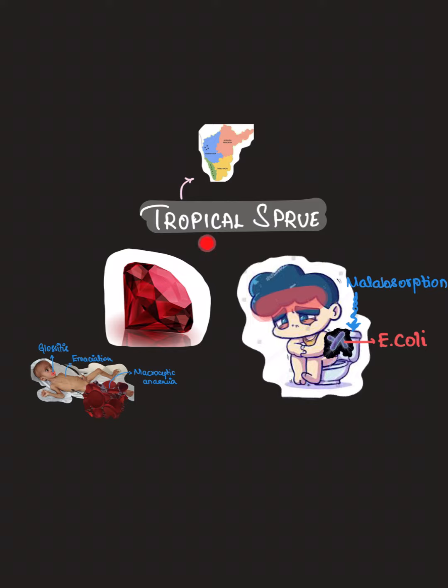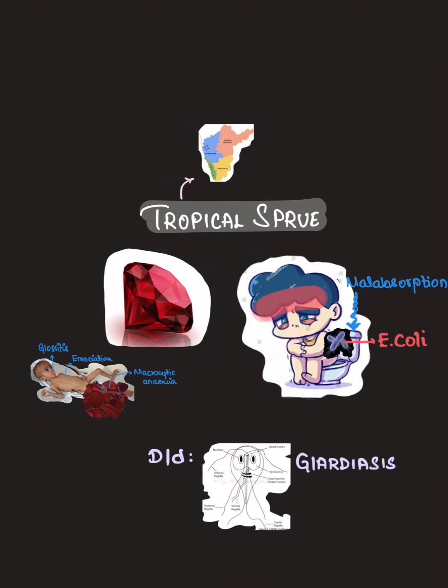Tropical sprue has to be differentiated from Giardia cysts, which are also very commonly seen in tropics. For treatment of tropical sprue, remember T for T — that is, tetracycline is the treatment.